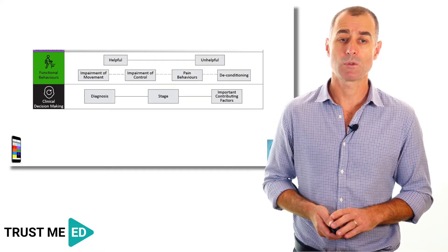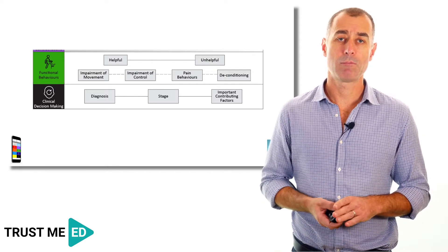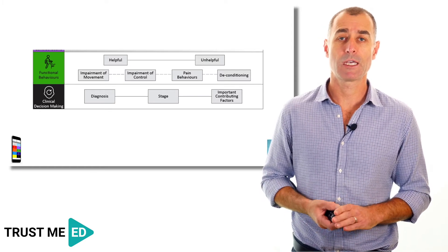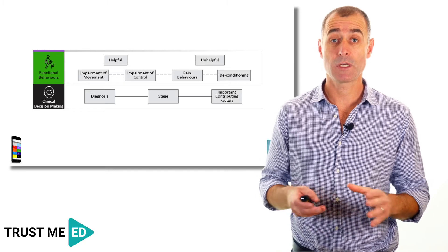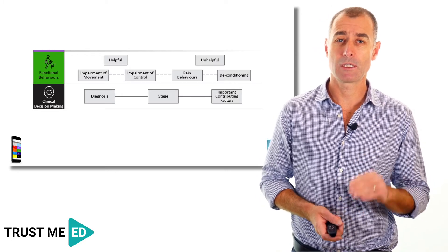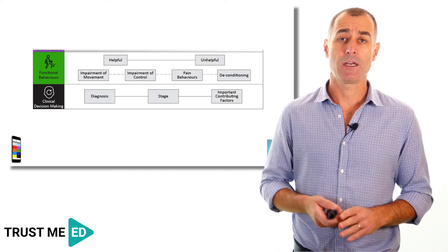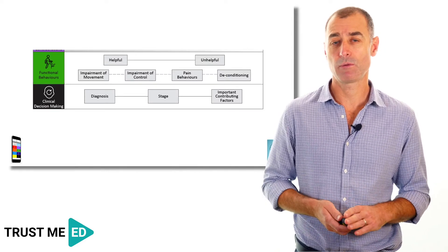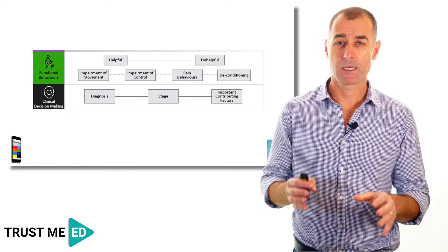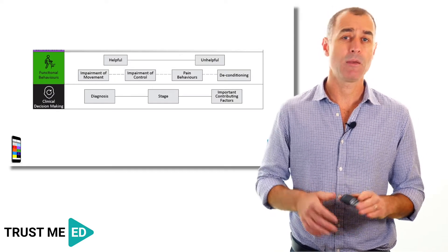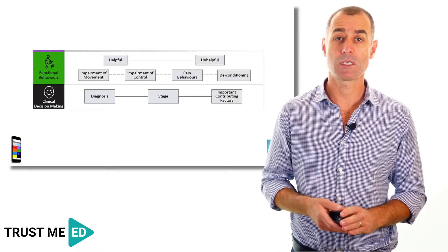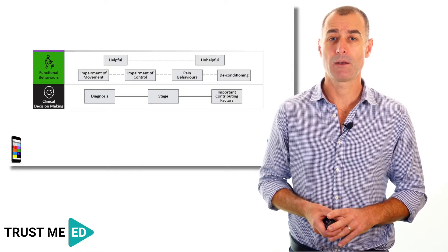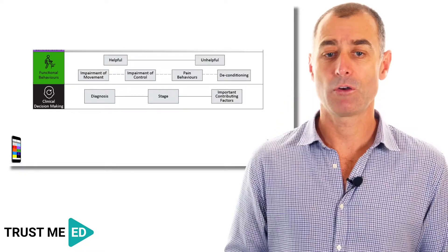At the bottom, we address functional behaviors — how someone is functioning or not functioning with their presenting symptoms — and determine whether what they're doing is helpful or unhelpful. This overall brings us to a clinical decision-making process: a provisional diagnosis, consideration of the stage of presentation, and clarity around important contributing factors for that individual. Through feedback, we've found it's most helpful when people say, 'I can understand what's wrong with this person and using the framework I can individualize considerations and, in conjunction with clinical guidelines, provide optimized care on an individual basis.'